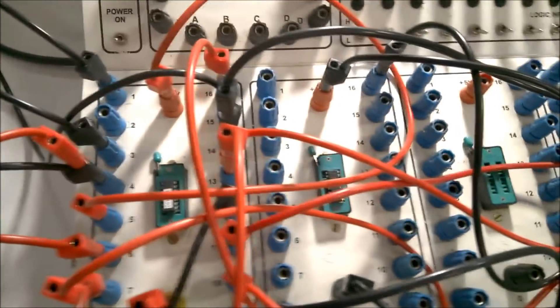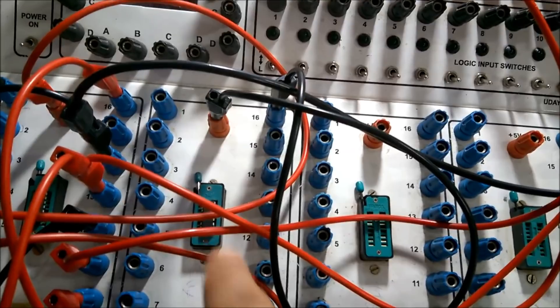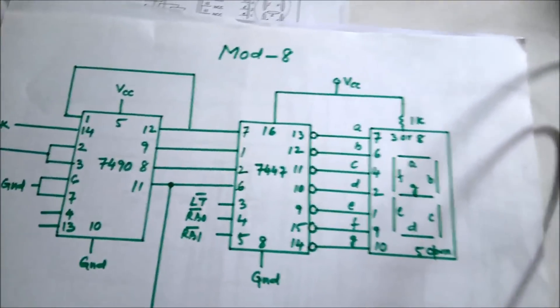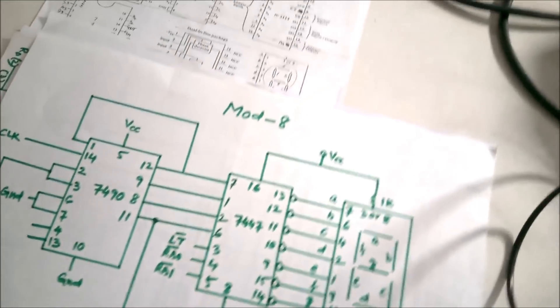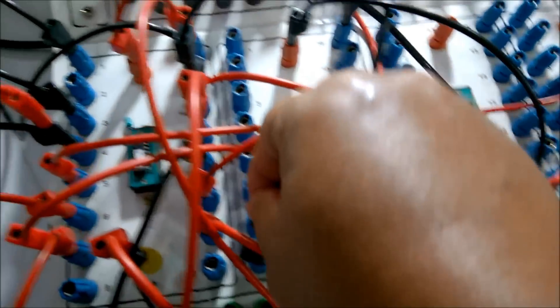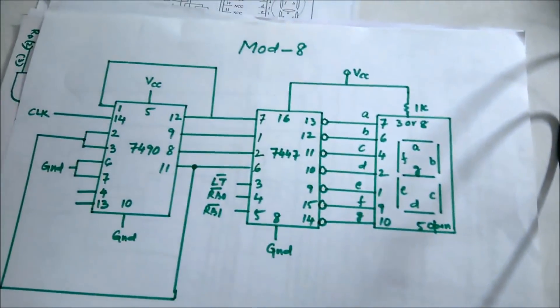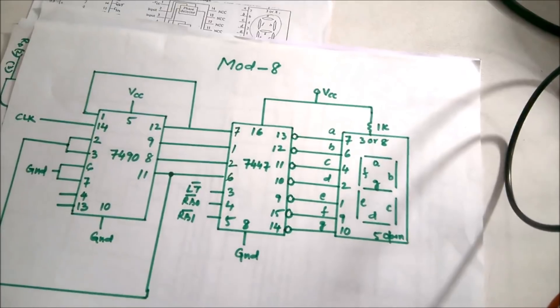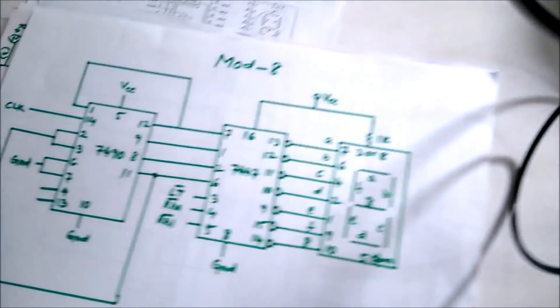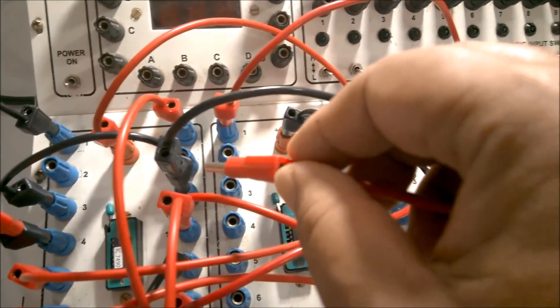Already I have placed the 7447 IC and the 7-segment display, with VCC and grounding connected. Pin 12 (QA) should be connected to pin 7 of the 7447. Pin 9 (QB) has to be connected to pin 1. Pin 8 (QC) is to be connected to pin 2. Pin 11 (QD) is to be connected to pin 6 of the 7447.